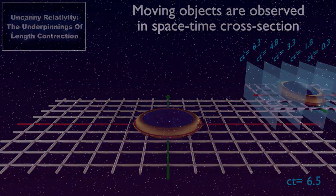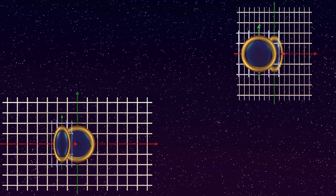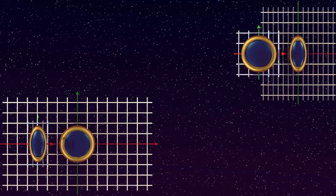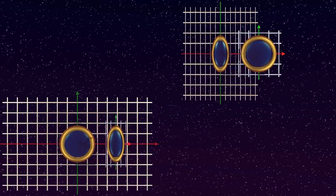The length contraction paradox arises because different objects in different inertial frames observe each other according to different space-time cross-sections.